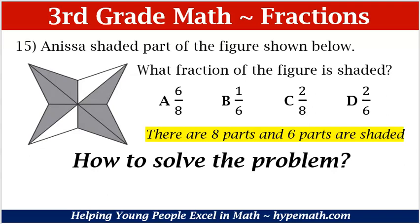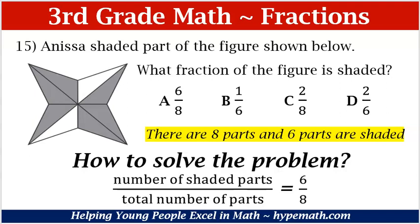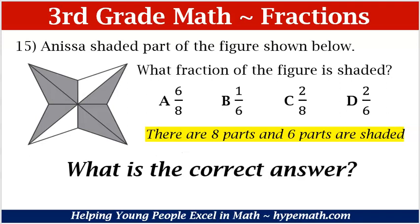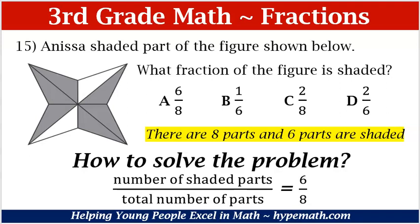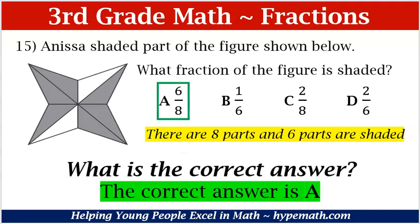How do we solve the problem? We have to remember that it's the number of parts shaded over the total number of parts. There are six parts that are shaded — that is our numerator — and our denominator is the total number of parts, which is eight. If you said A, six-eighths, you are absolutely correct. Our fraction of the figure that is shaded is six-eighths because there are six parts shaded and eight total parts.